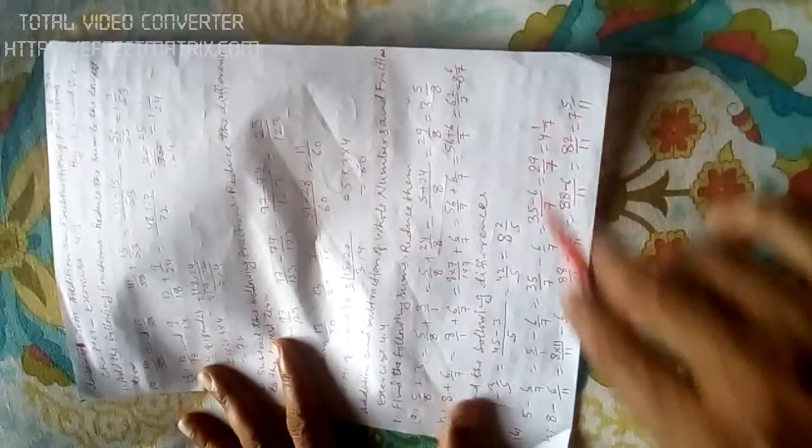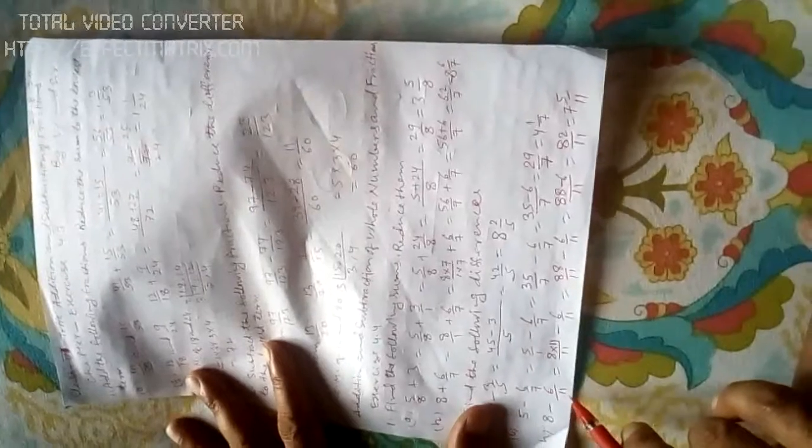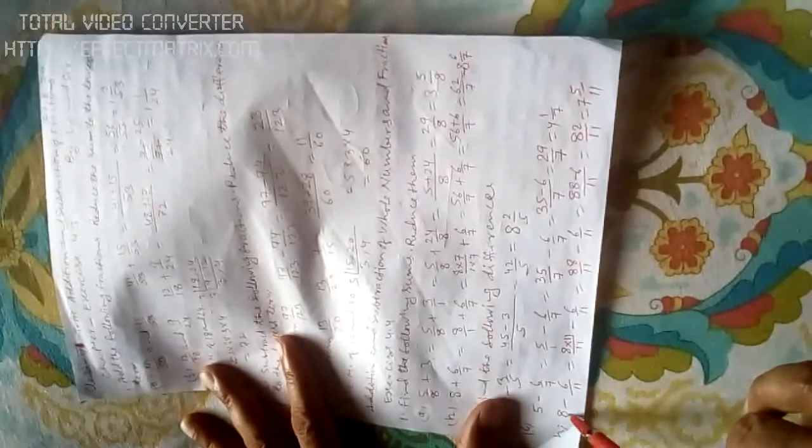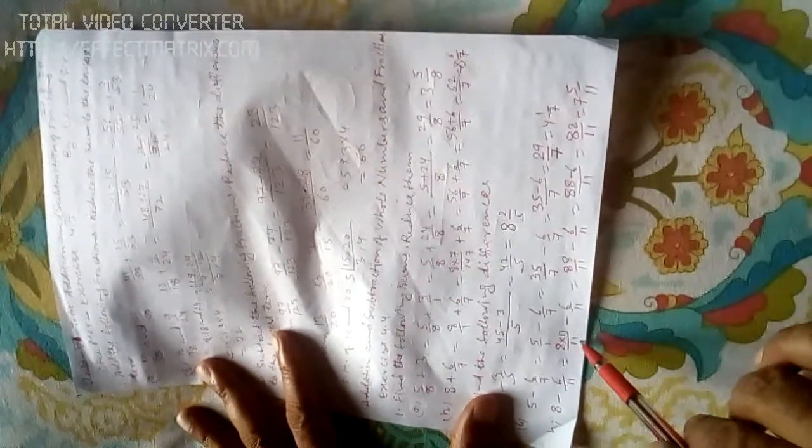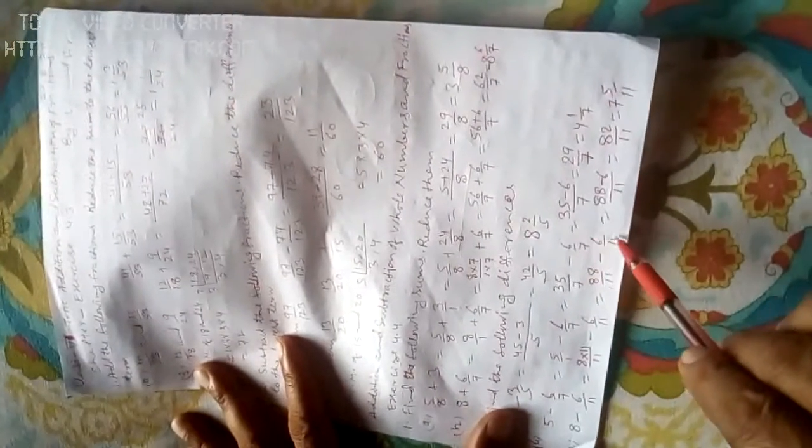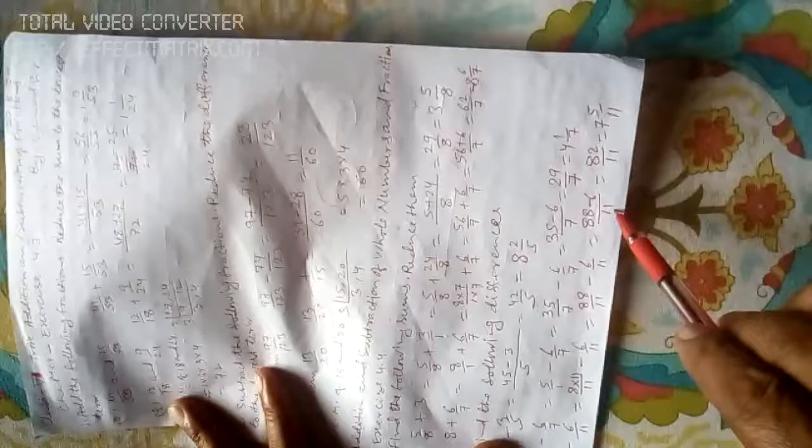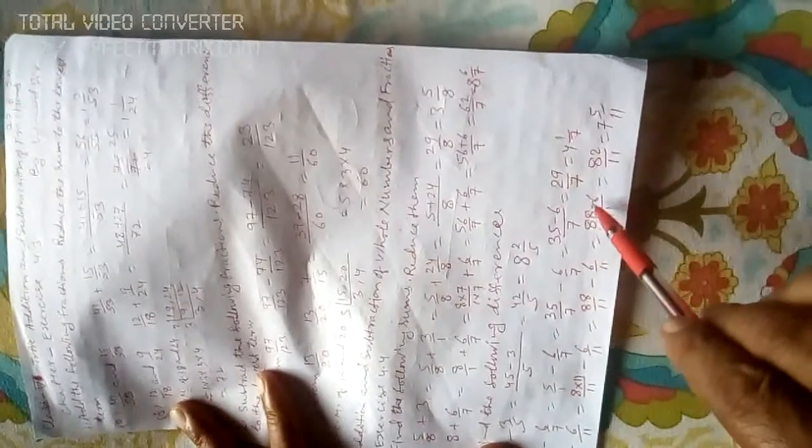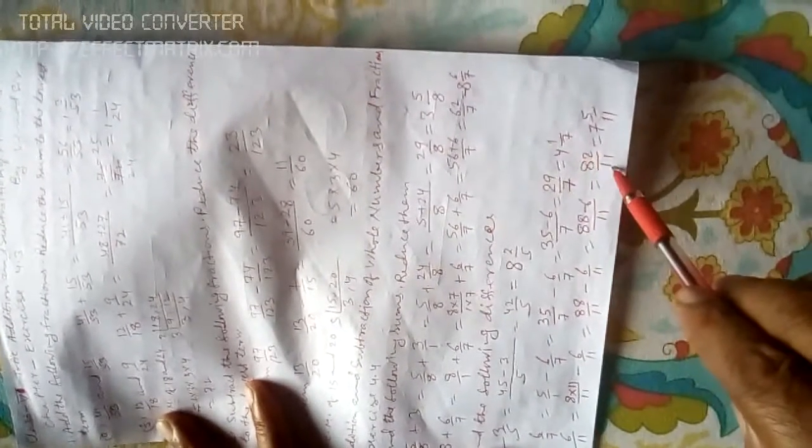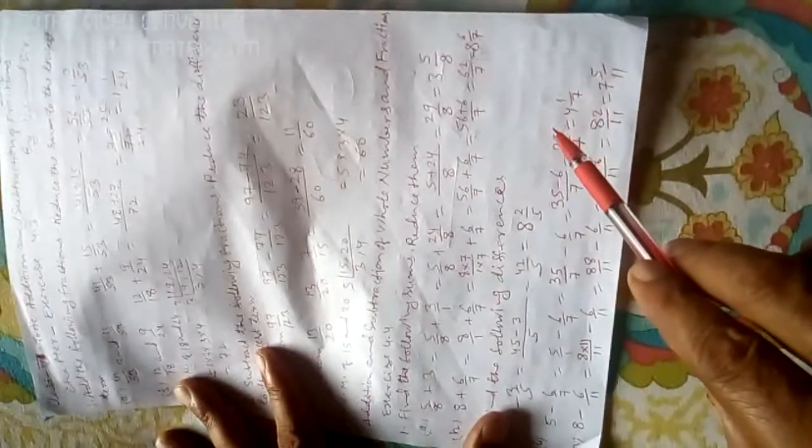Problem: 8 minus 6 by 11. To get denominator 11, multiply 8 by 11 gives 88 by 11 minus 6 by 11. Same denominator is 11, so 88 minus 6 equals 82 by 11, which is 7 and 5 by 11. We will continue in the next class.